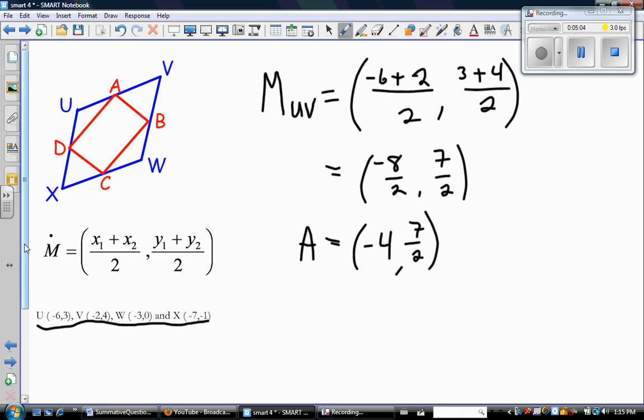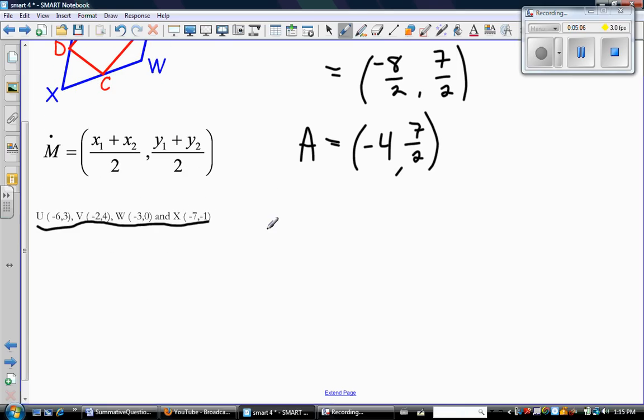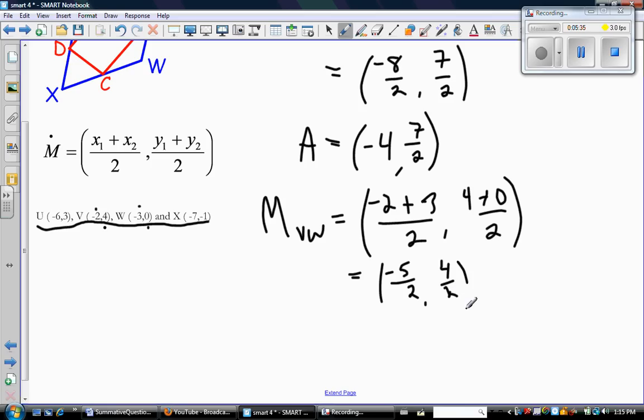So let's do one more together. Let's do the midpoint of V, W. So V, W, so x1 plus x2 over 2. And then y1 plus y2 over 2. Okay. So that gives me negative 5 over 2 and 4 over 2. And negative 5 over 2 doesn't reduce, so I leave it. But 4 over 2 is just 2. And again, this was the point that we called D.